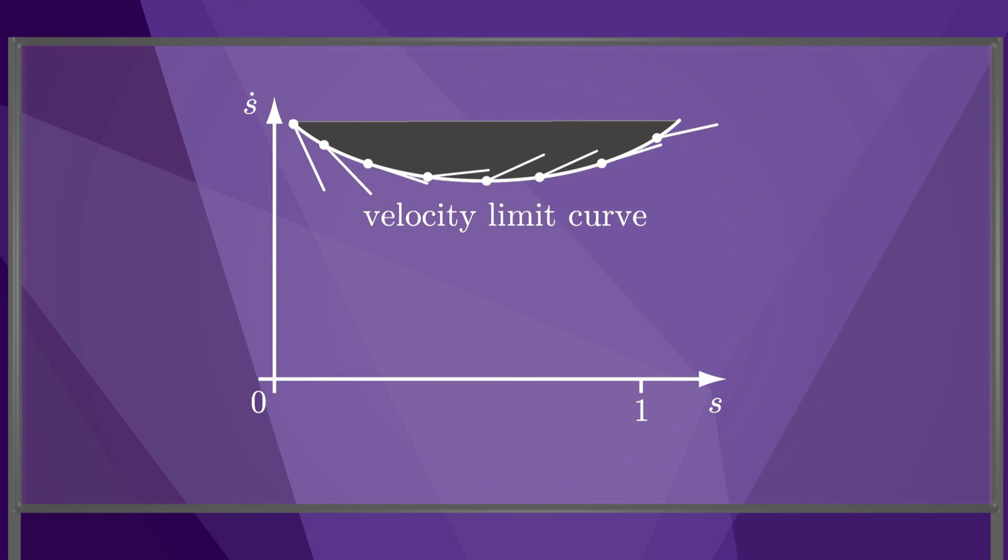In general, we could plot a velocity limit curve. At states on this curve, only a single acceleration is possible, and at states above this curve, the robot leaves the path immediately. At states below the curve, there is a cone of possible tangent vectors.